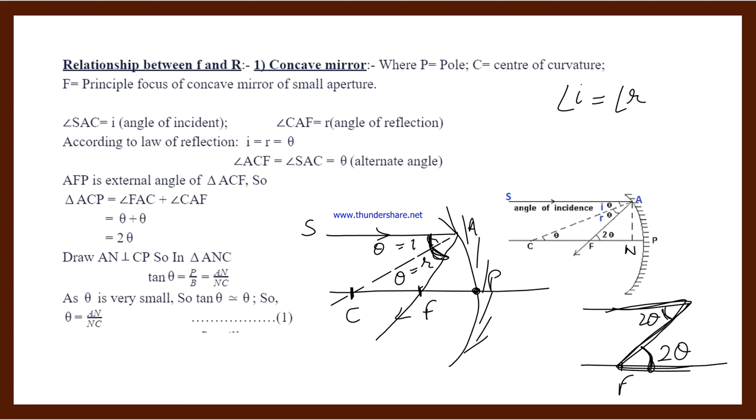The total angle is theta plus theta, which equals 2 theta. And here F is the focus. Here we have vertically opposite angles, so this is also 2 theta. Both are the same. Here the angle is also 2 theta.